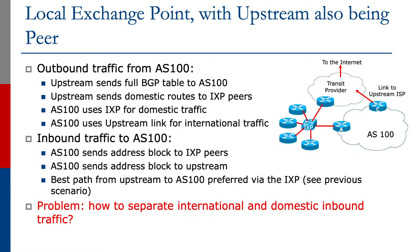What about inbound traffic towards AS100? AS100 will send the address block to the IXP peers and it will send the address block to the upstream. The best path from the upstream to AS100 has two paths: one going through the transit link and another through the peering link. So how do we separate international and domestic inbound traffic if we want domestic traffic to go over the peering link and international over the transit link?